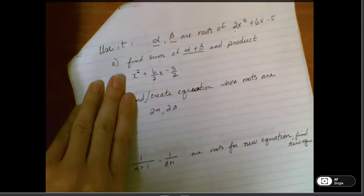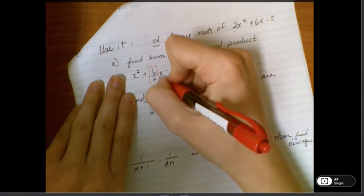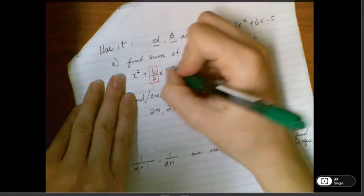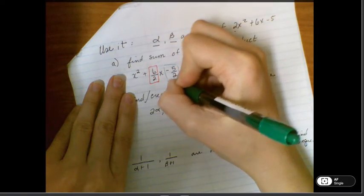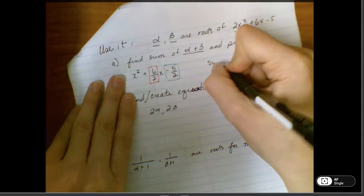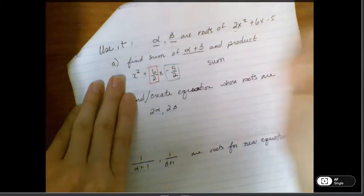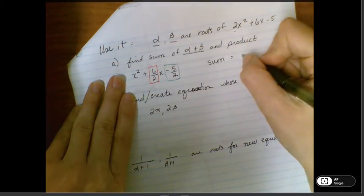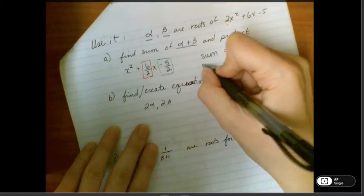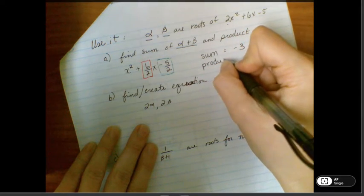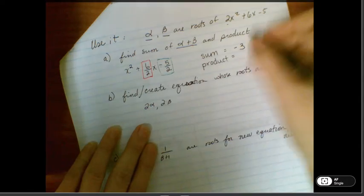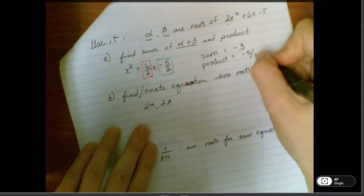So when we looked earlier, we saw that this right here was the opposite of the sum, and this right here was the product, so we can write that out. So the sum is the opposite of 6 divided by 2, so it must be the opposite of 3, and we write that as negative 3, and then the product is going to just be whatever this last term is, so negative 5 halves.